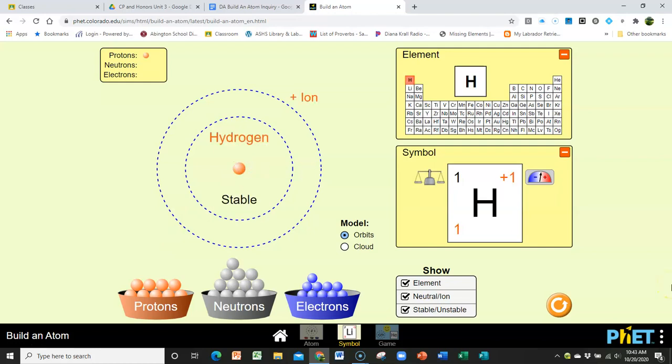And then it says to draw on the page what you see in this box. So you see the symbol H, which is the element hydrogen, and then it wants you to copy down this information.